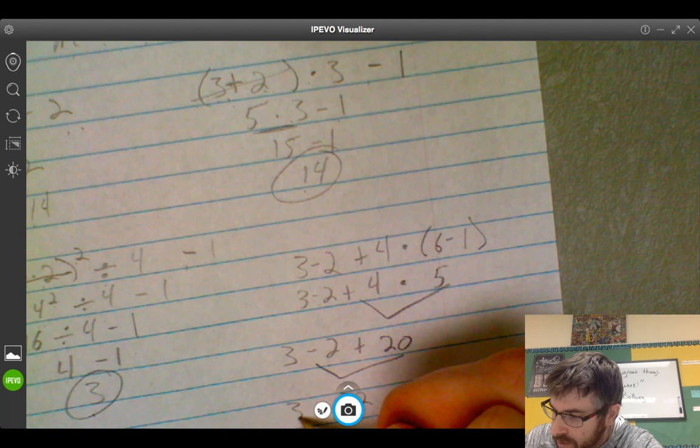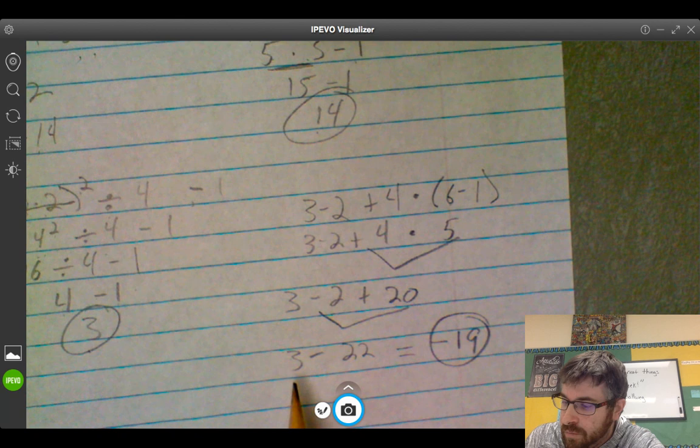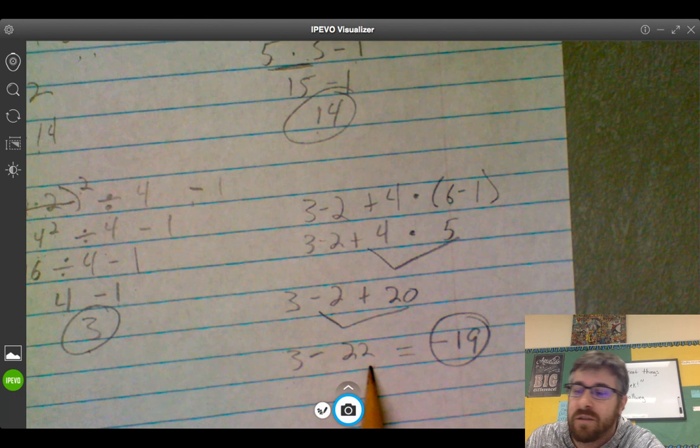3 minus 22. 22, 21, 20, 19 equals negative 19. Why is it negative? Because 3 is in front of 22. So you have to subtract it left to right because we do everything left to right here in America.